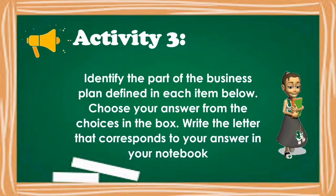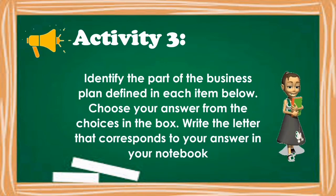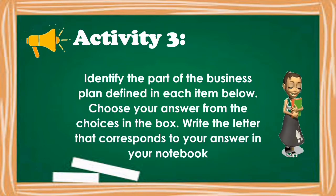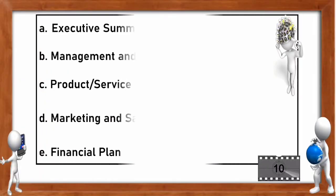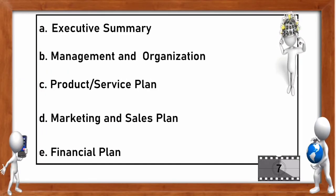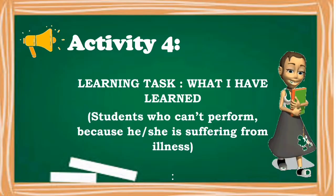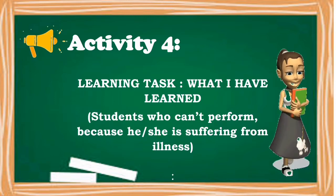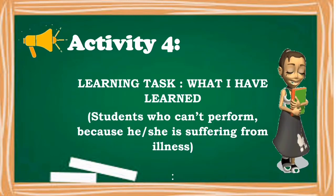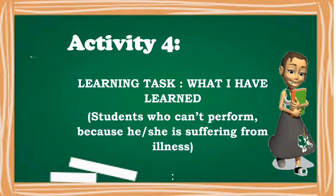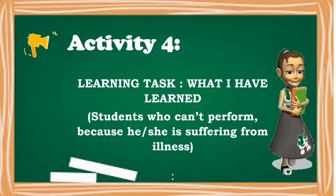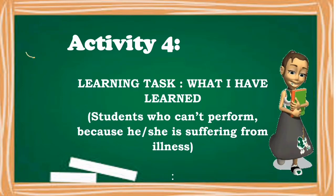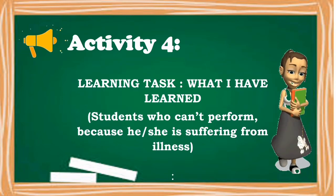For Activity 3, identify the part of the business plan defined in each item. Choose your answer from the choices in the box and write the letter that corresponds to your answer in your notebook. For Activity 4 — What I Have Learned — this is for learners who cannot perform well because of illness. You are provided with a 'What I Have Learned' paper to write your thoughts. You can also use any dialect that you are comfortable with.